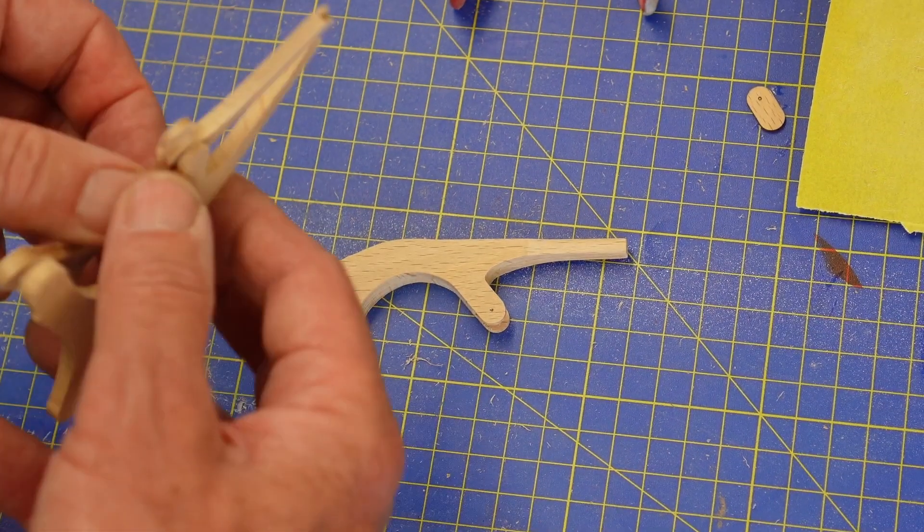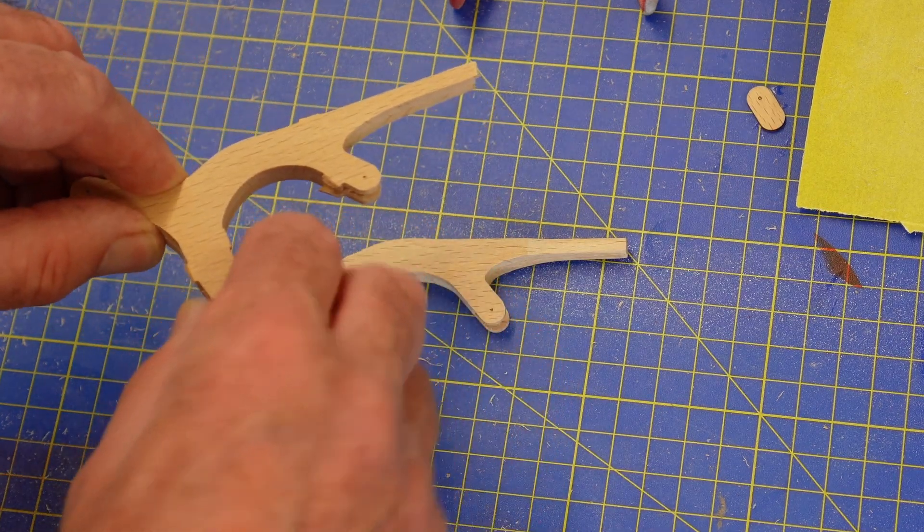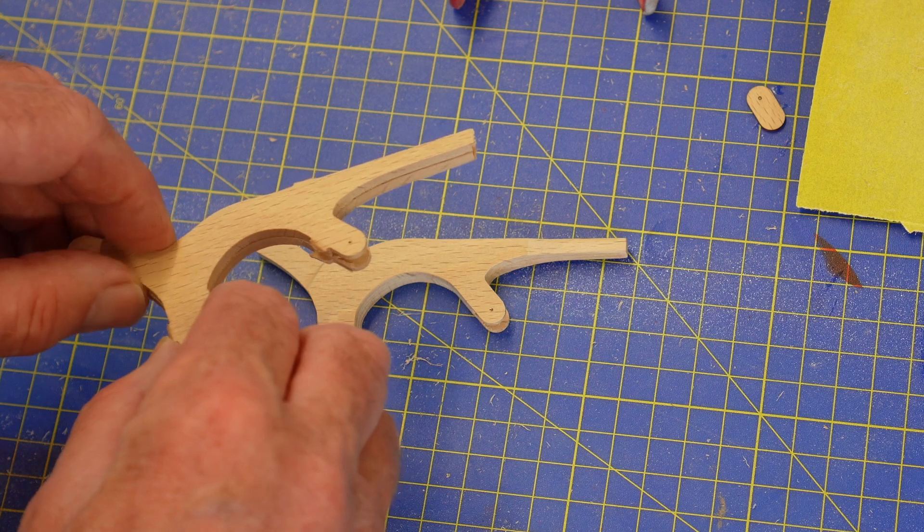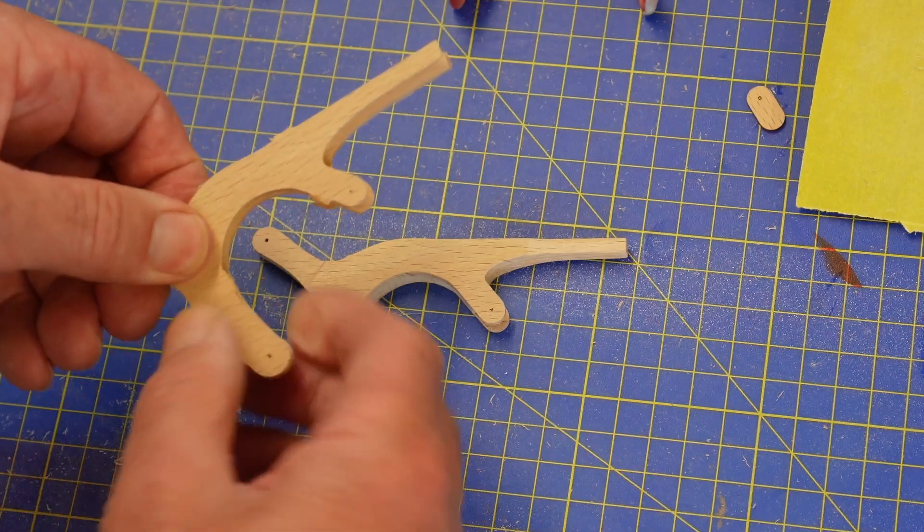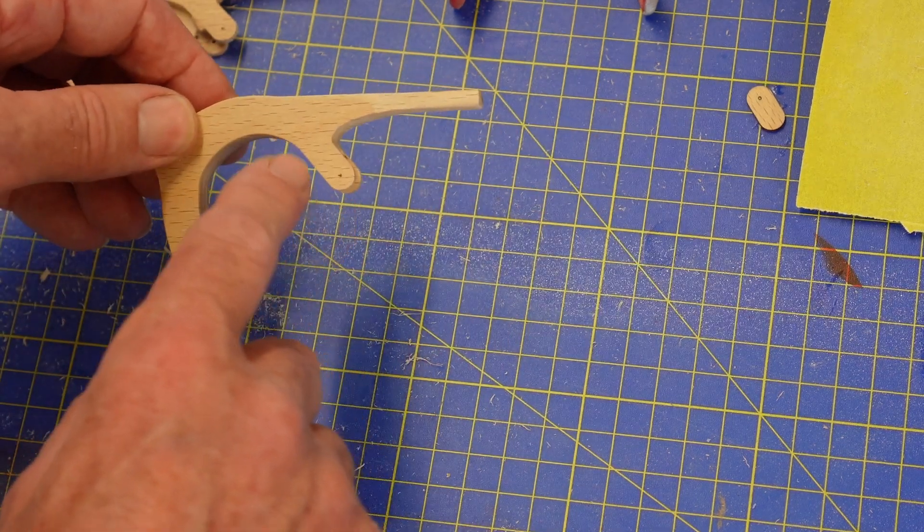I overcome this by making them in two halves, gluing them together, and then the slightly different grain direction there makes them more than twice as strong. So then you've got a good strong part.